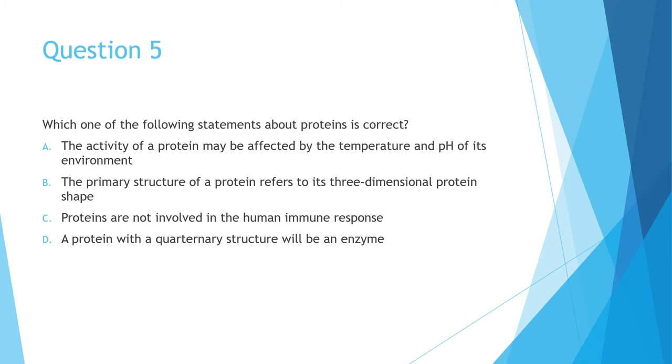Question 5 has 4 statements regarding proteins, and you have to select the one that is correct. So once again, feel free to pause this video and recommence after you've selected your answer. The correct answer is of course A. Most students did well on this question. The activity of a protein does get affected by the temperature and pH of its environment. At the extreme end of both of those parameters, proteins can actually denature. The other three statements are incorrect. I think given the breakdown below, there is really no need to explain why.